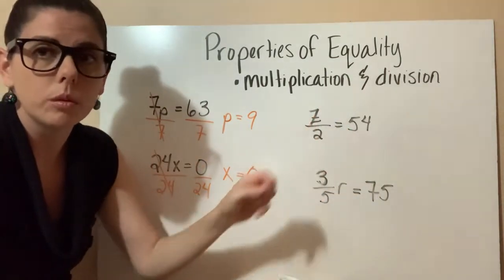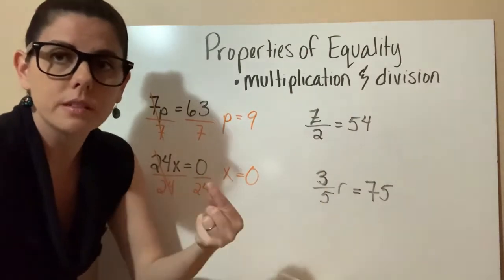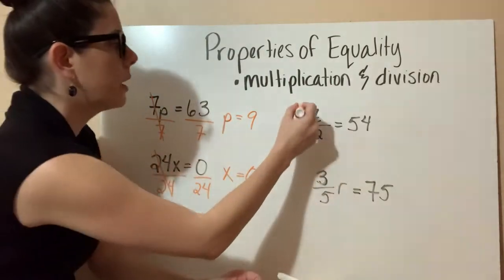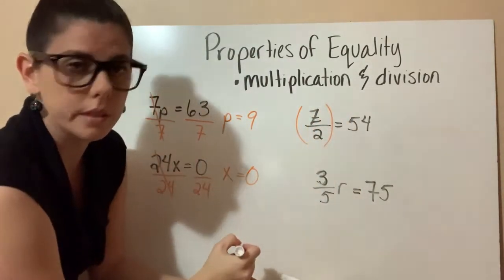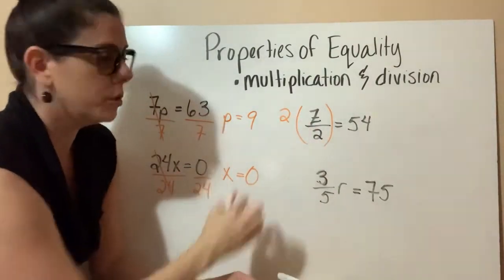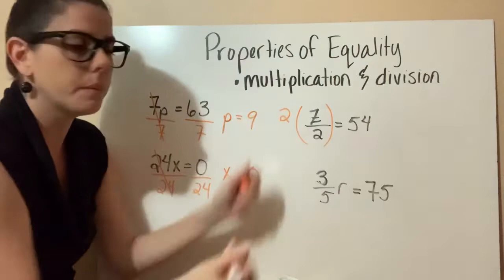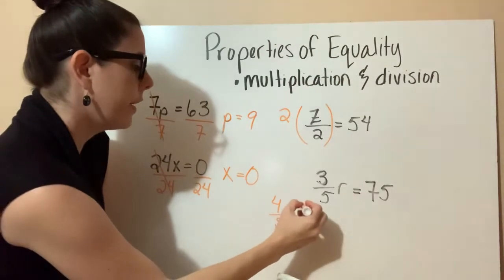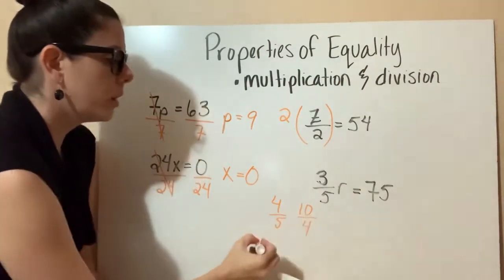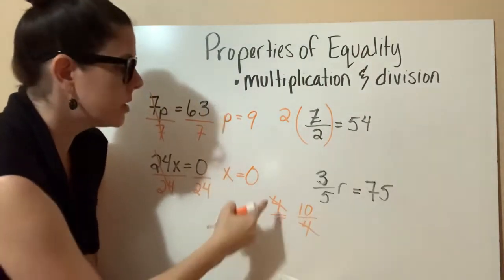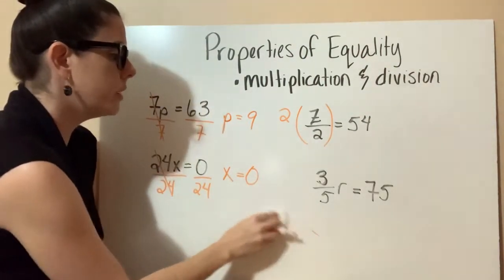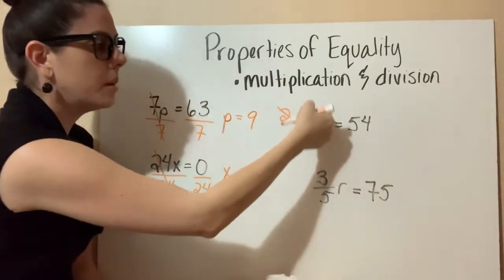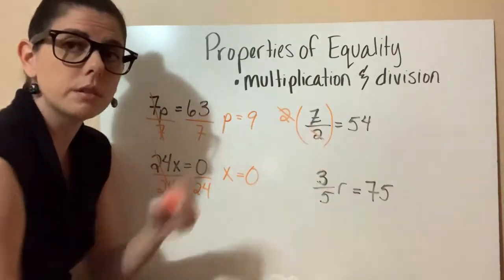If we're dividing the variable by 2, the opposite of division is multiplication, so we need to do the opposite operation. What I like to do is put this whole thing in parentheses and then multiply by 2. I like to put it up top — because with fractions, like 4 over 5 divided by 10 over 4, we know we can cross-cancel. The same is true here: these 2s will cancel out, leaving z by itself, because 2 divided by 2 equals 1.